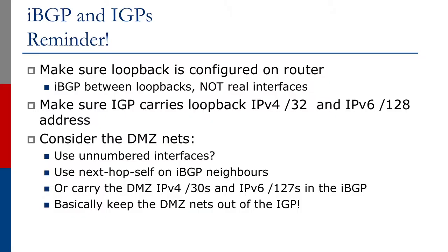We will now provide various configuration tips on BGP and IGP best practices. The first one to remember is the use of loopback addresses. Always make sure loopback is configured on the router. Remember that IBGP is between loopbacks and not real interfaces. IGP carries loopback addresses, which is typically a /32 address for IPv4 and a /128 address for IPv6.